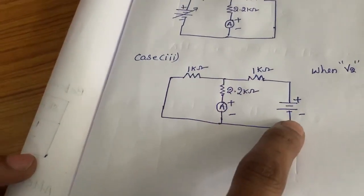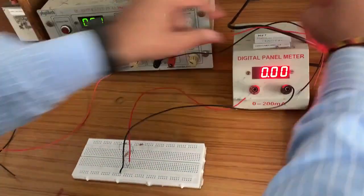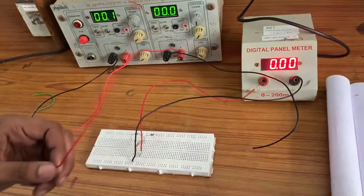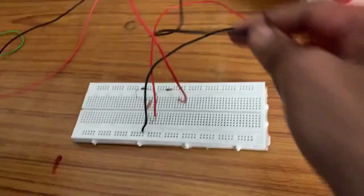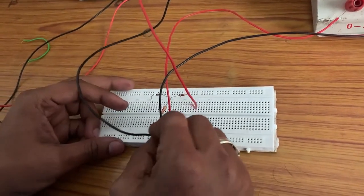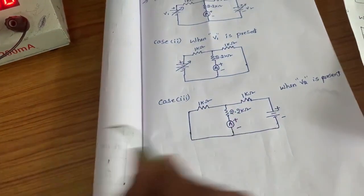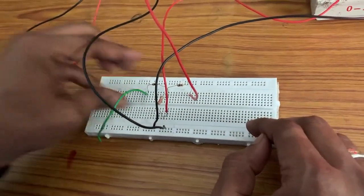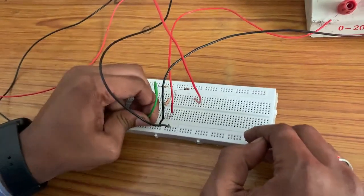Now case 3: V1 is equal to 0 and V2 is present. We will see the response across the 2.2 kilo ohm. We will remove the V1 connection and connect the RPS to V2, connected to the 1 kilo ohm second terminal, with RPS negative connected to ground. The 1 kilo ohm first terminal is connected to ground. This is the connection for case 3.